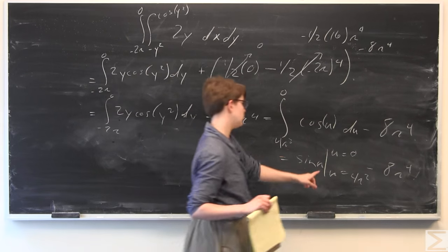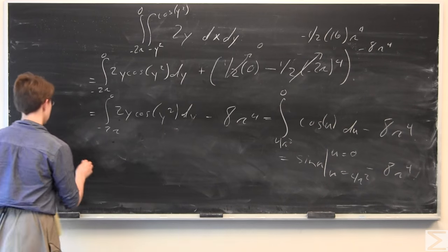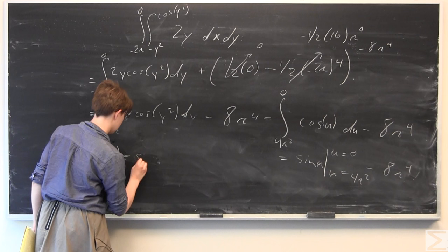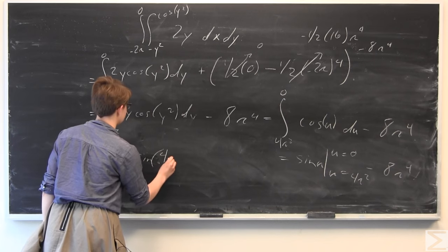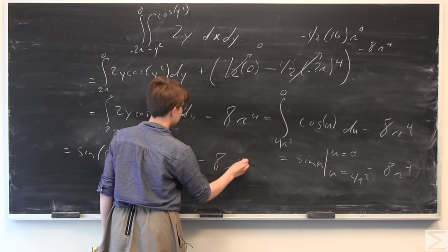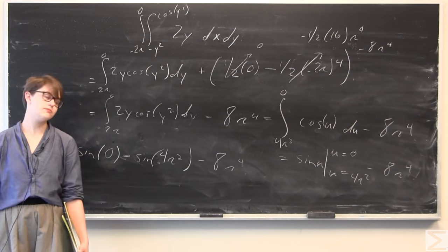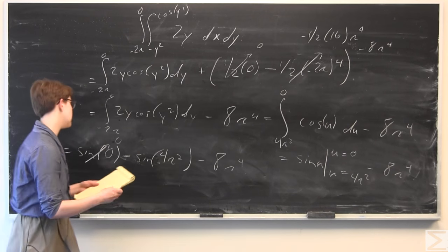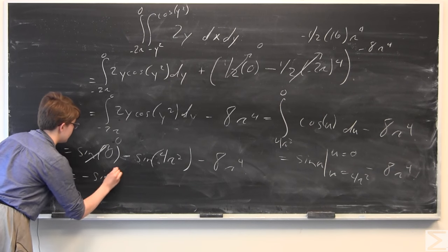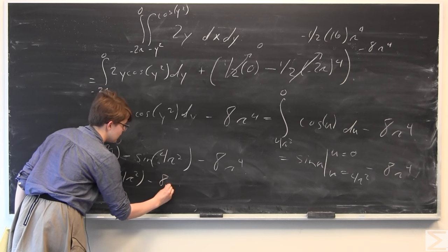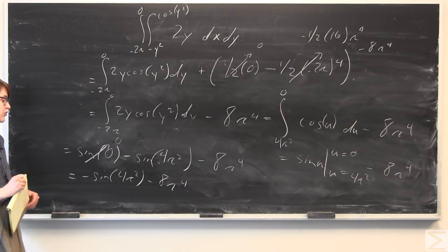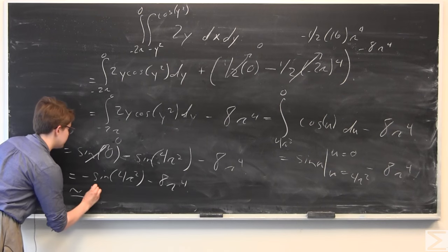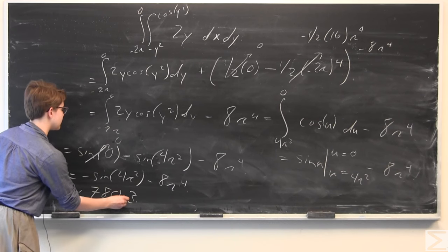Plugging in and evaluating at u equals 0 and u equals 4π squared, we get sine of 0 minus sine of 4π squared, minus 8π to the fourth. If we plug this into our calculator in radian mode, with 4π squared, we get approximately 780.3. That's our final answer for the evaluated iterated integral.